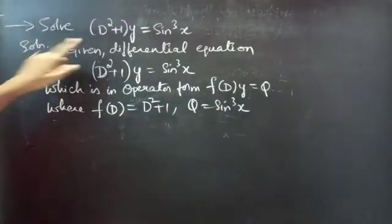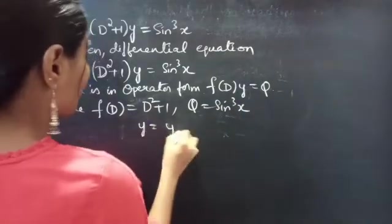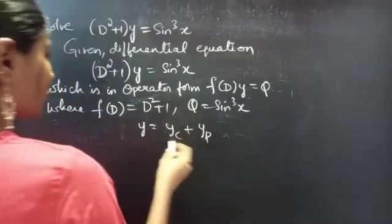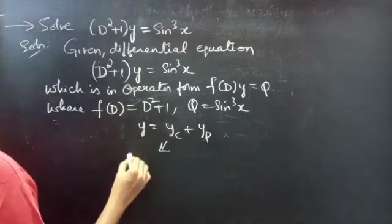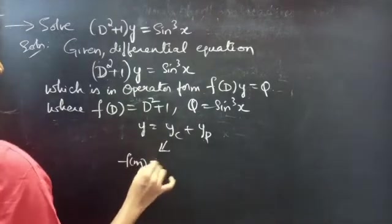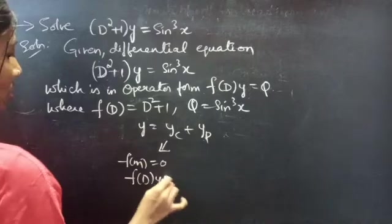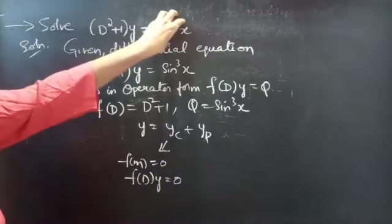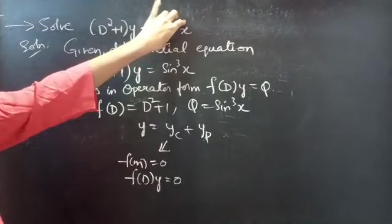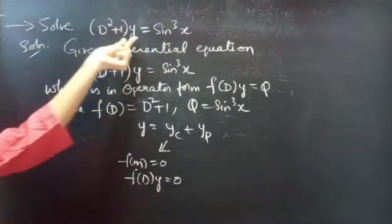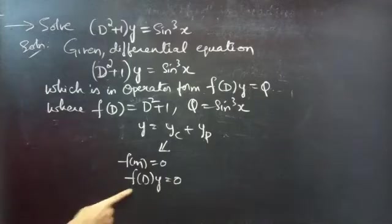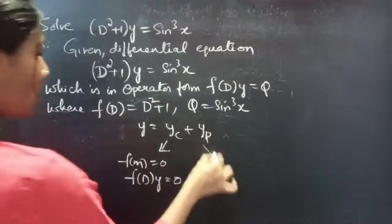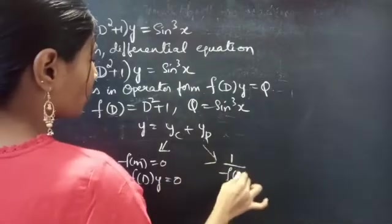Now we will find the general solution to the given equation, which is given by y = yc + yp. Here yc is the complementary function and yp is the particular integral. We will find yc using roots of the auxiliary equation of the homogeneous equation. If we take RHS to 0, we get f(D)·y = 0, and we will find yp using 1/f(D) · Q.